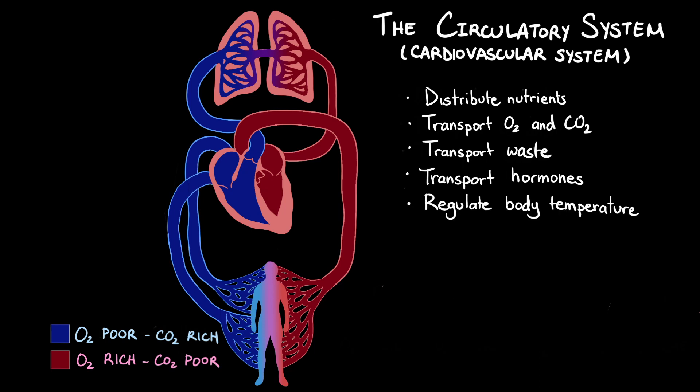The circulatory system consists of three components: the heart, which is the pump that moves the blood throughout the entire system; the blood vessels that carry the blood throughout the body; and of course the blood itself.